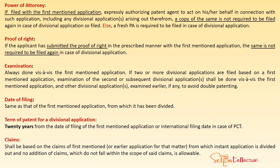The date of filing in case of a divisional application will be the same as that of the first-mentioned application from which it was divided. The term of patent will be 20 years from the date of filing of the parent or first-mentioned application, or in case of PCT, from the international filing date. Claims shall be based on the claims of the first-mentioned or parent application from which the instant application is divided, and no addition of claims falling outside the scope of those claims is allowable.